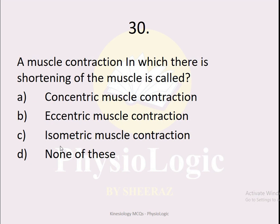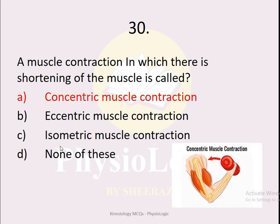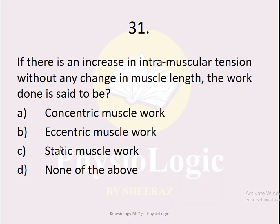MCQ number 30: A muscle contraction in which there is shortening of the muscle is called — option A concentric, option B eccentric, option C isometric, option D none of these. The correct option is option A, concentric muscle contraction.